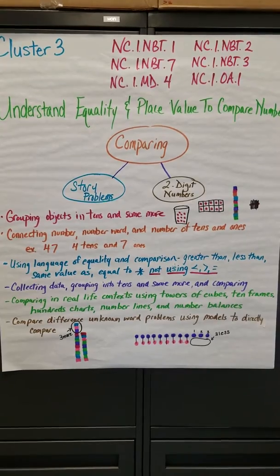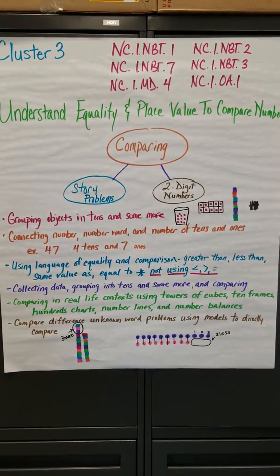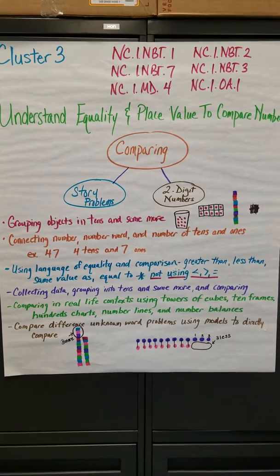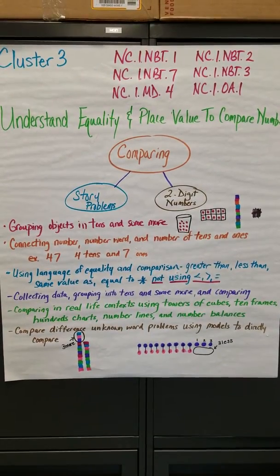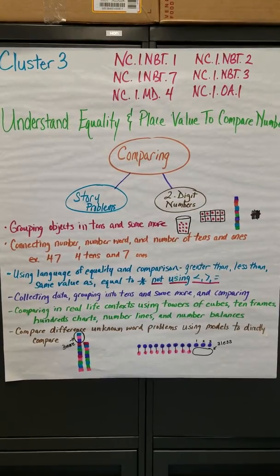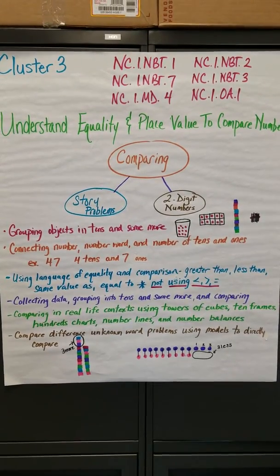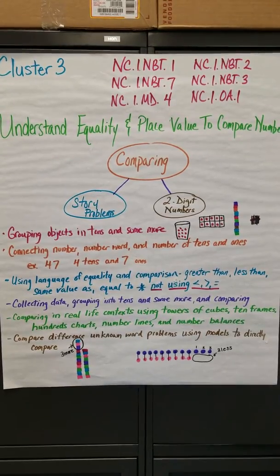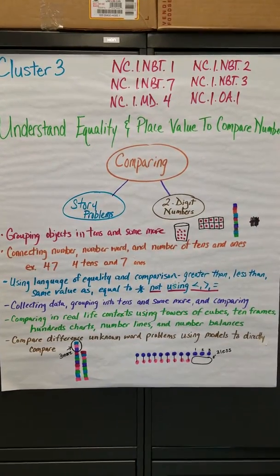It covers understanding equality and place value to compare numbers. This is a four to six week cluster. The big idea in this cluster is comparing — there's a lot of comparing using two-digit numbers, and this is where we introduce OA1 Compare Difference Unknown Story Problems.